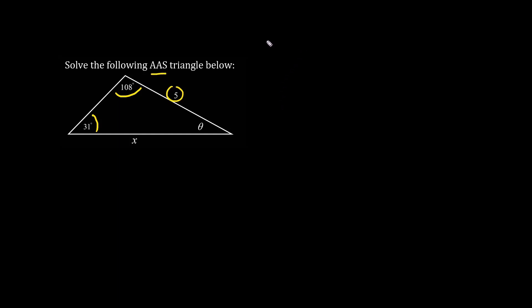In general, we always use the sine law unless we have SSS, side, side, side, or SAS, side, angle, side. Under these two circumstances, we use another formula which is called the cosine law.